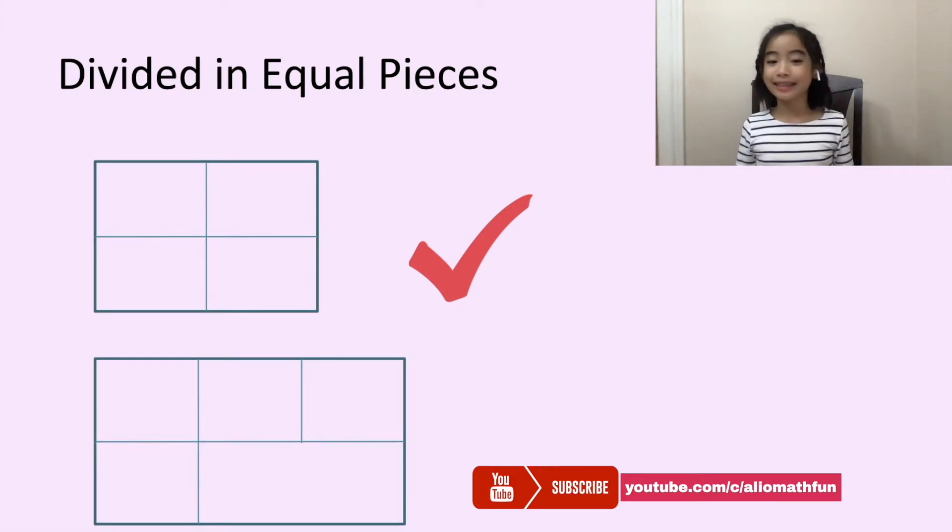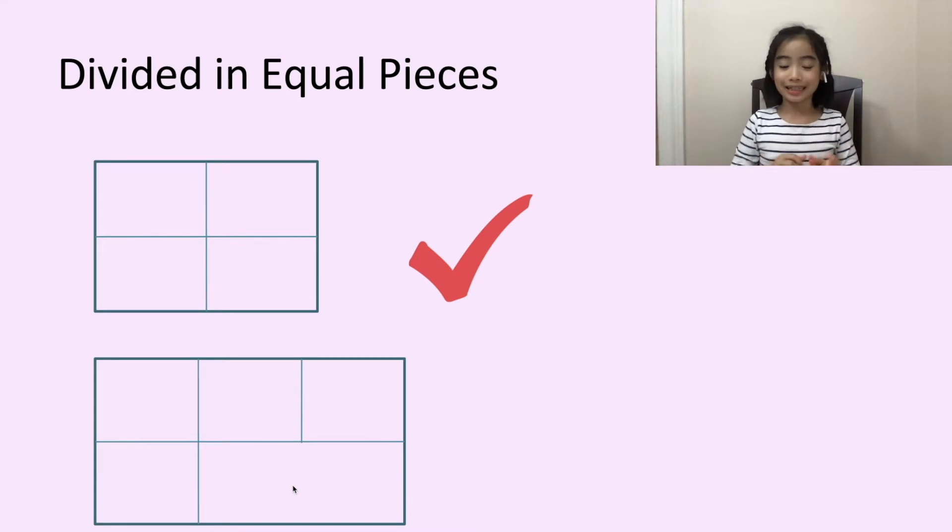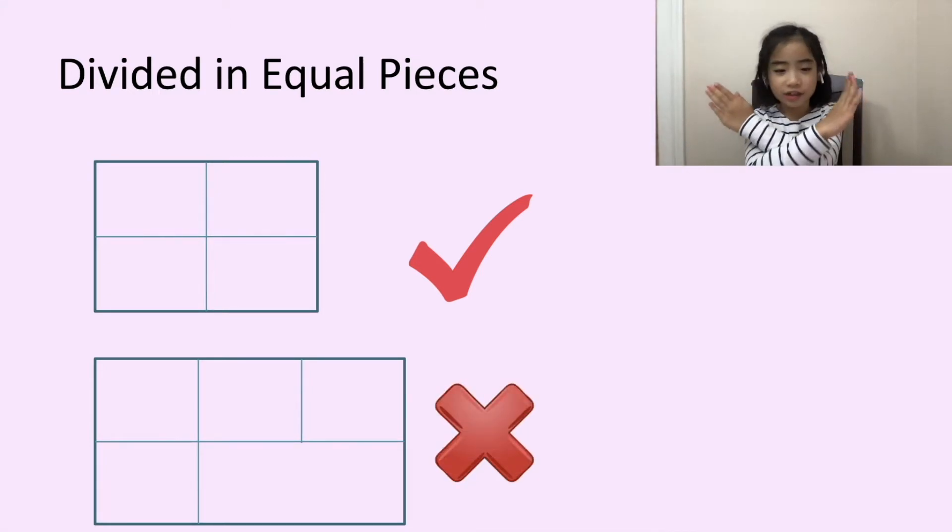Now, let's look at the second example. It has one, two, three, four, five. Five pieces. We see that this piece is definitely bigger than the other pieces. So, this is incorrect.